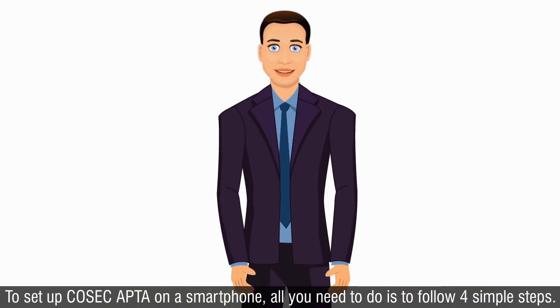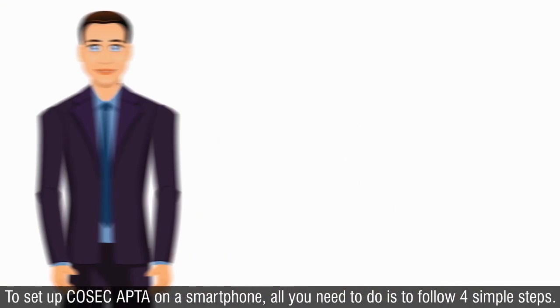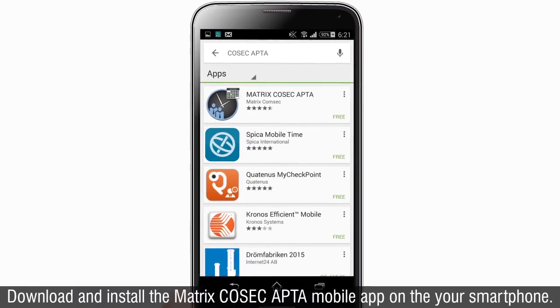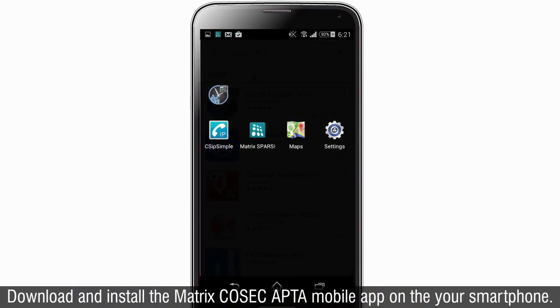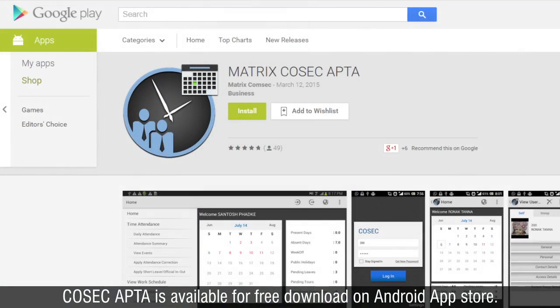To set up Cosec Apta on a smartphone, all you need to do is to follow four simple steps. Step 1: Download and install the Matrix Cosec Apta mobile app on your smartphone. Cosec Apta is available for free download on Android App Store. Step 2: Launch Cosec Apta by tapping the application icon on the smartphone.